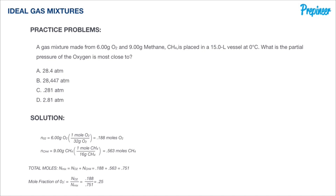Now we can use the ideal gas equation to calculate the partial pressure of each gas. Remember, this is on page 87 of the NCEES reference handbook, so get very familiar with it.